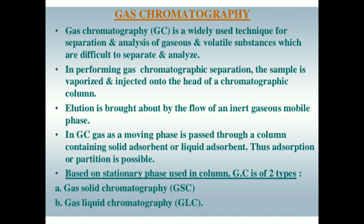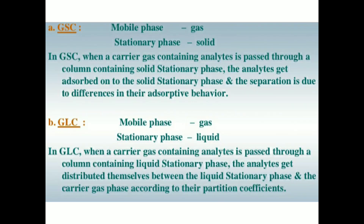GC is of two types: gas solid chromatography (GSC) and gas liquid chromatography (GLC). In GSC, the mobile phase is gas and the stationary phase is solid. When a carrier gas containing analytes is passed through a column containing a solid stationary phase, the analytes get adsorbed onto the solid stationary phase and separation is due to differences in their adsorption behavior.